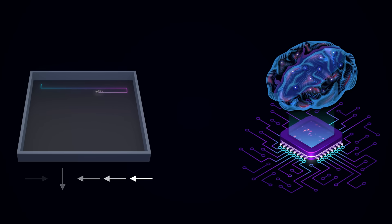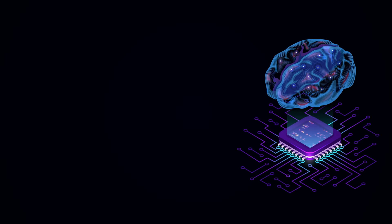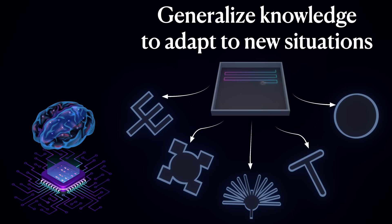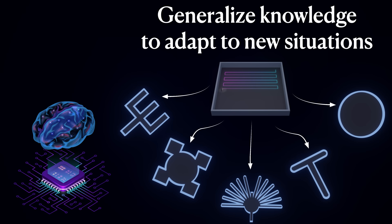It is humanity's long-time dream to create machines that can think. But what exactly does it mean? One particular characteristic of intelligence is the ability to generalize knowledge and flexibly adapt it to new situations. Such generalization is indeed one of the cornerstone problems in modern machine learning.